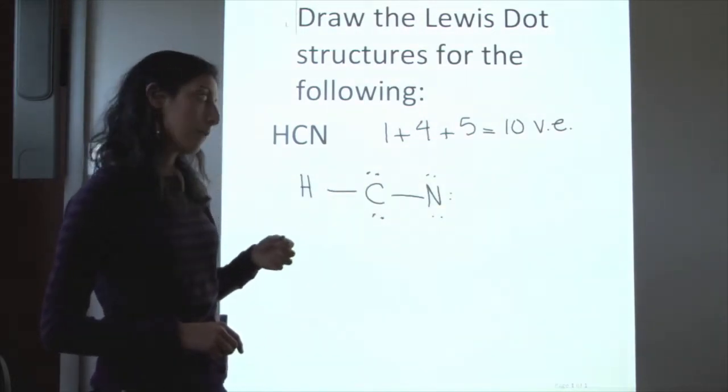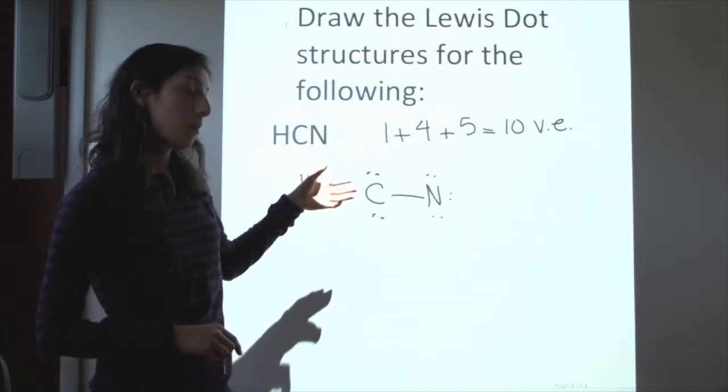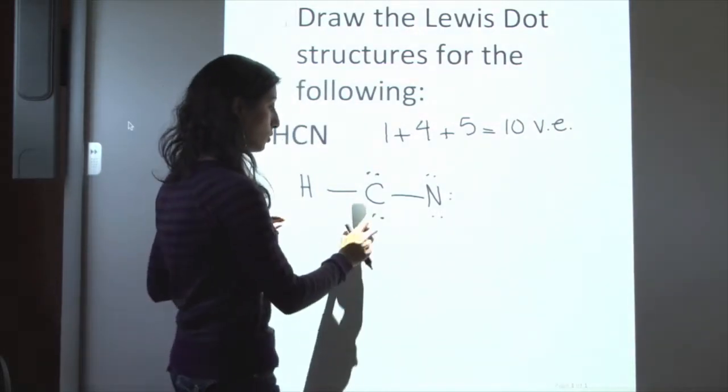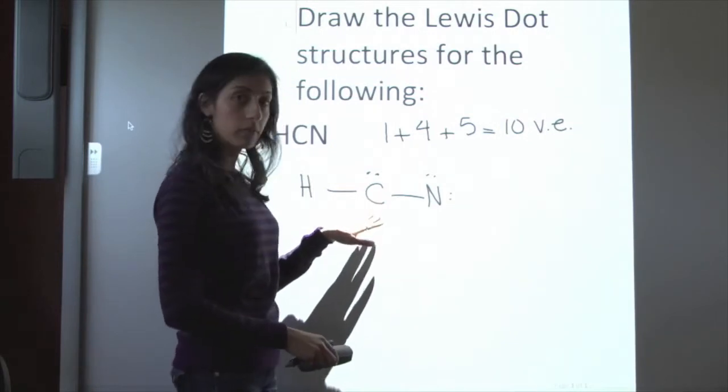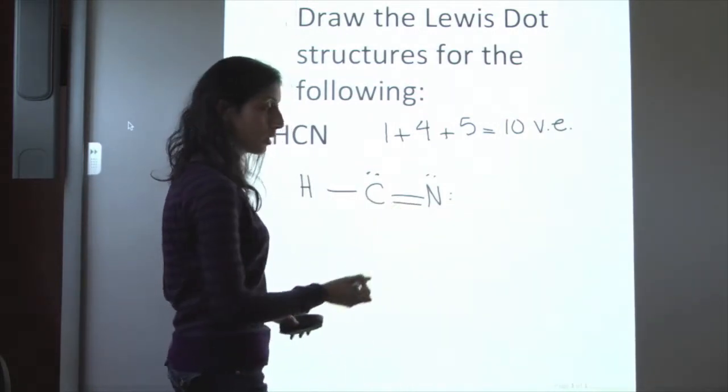So what that indicates is that this is obviously wrong. What we need to do is form double or triple bonds. The way you do that, you remove a lone pair from the carbon and a lone pair from the nitrogen, and you draw the double bond.